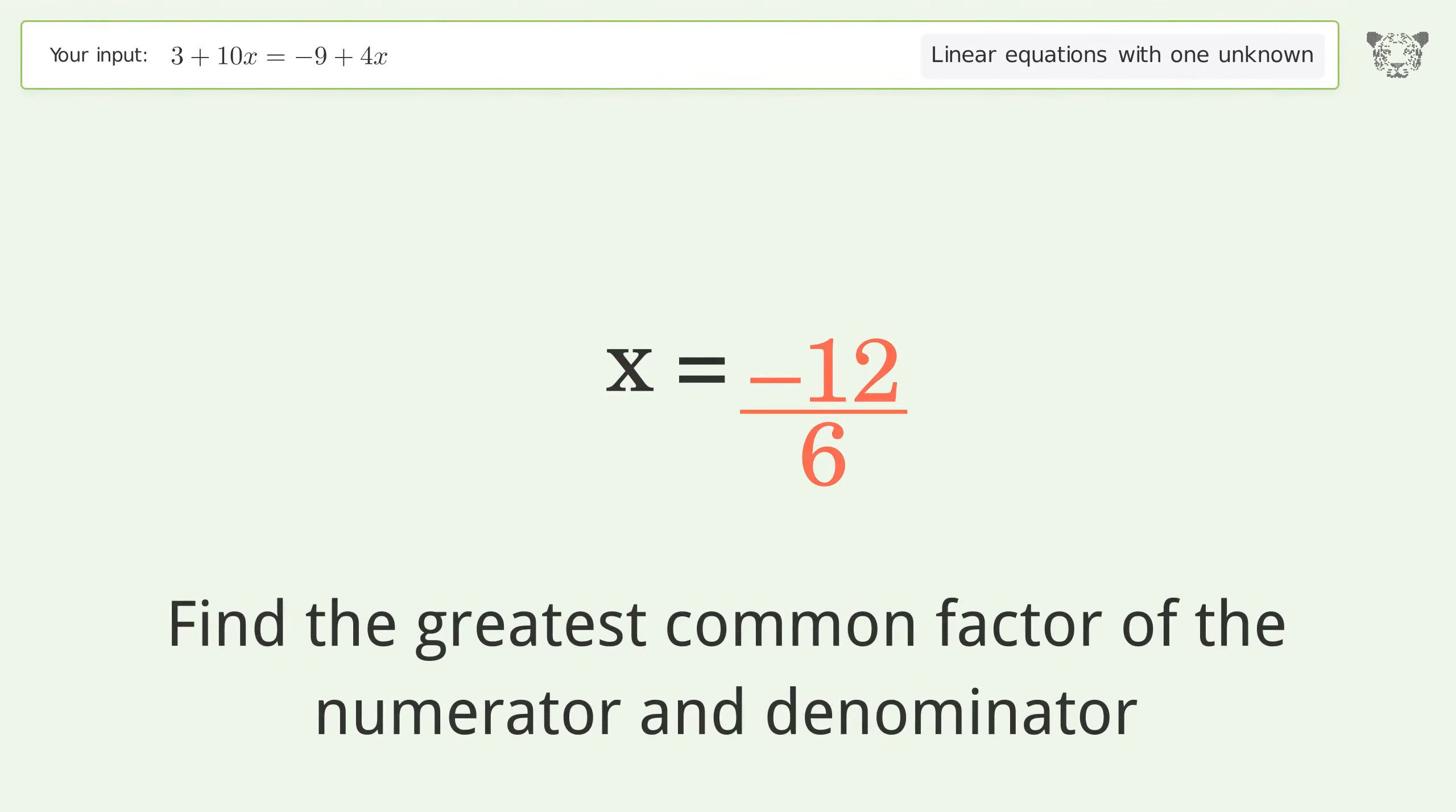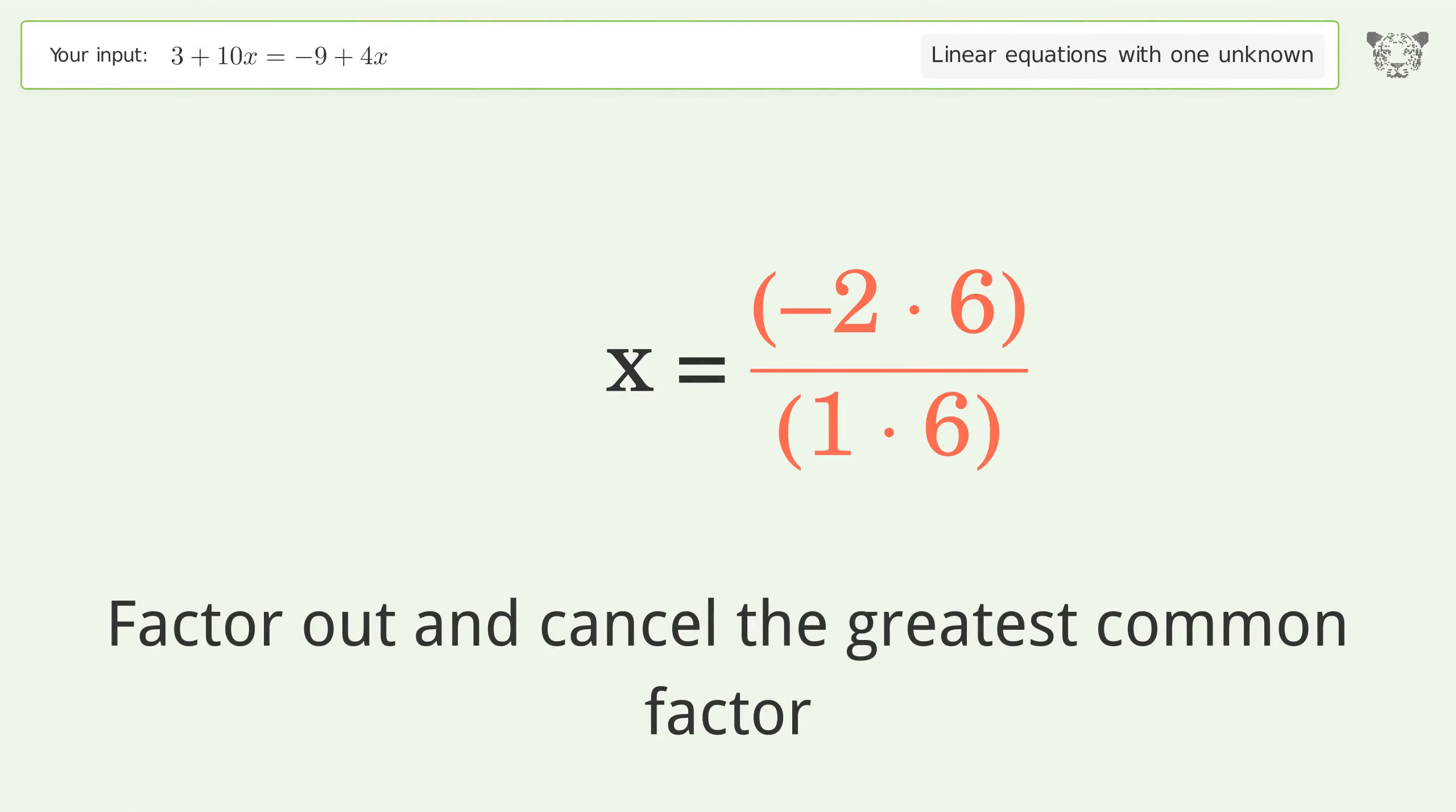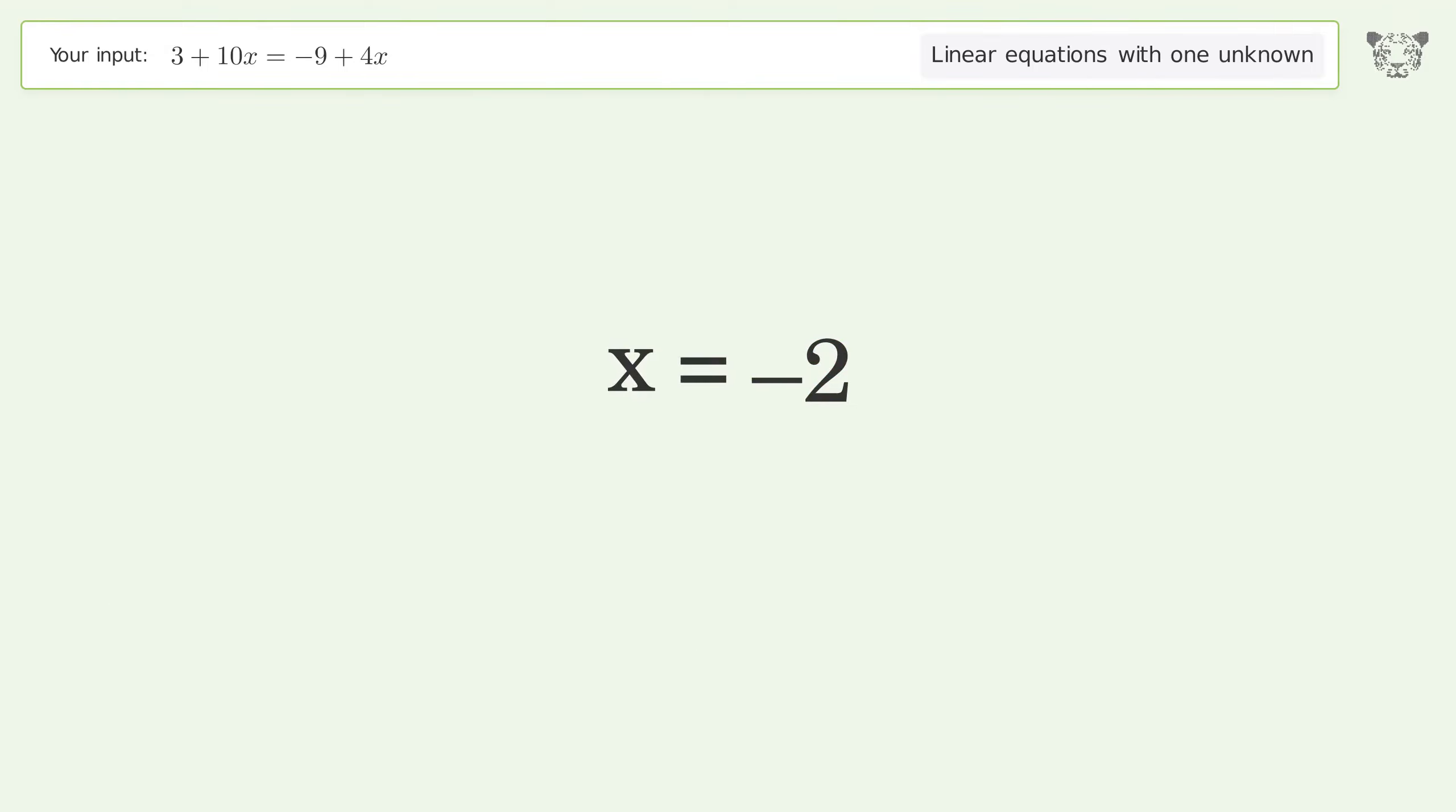Find the greatest common factor of the numerator and denominator. Factor out and cancel the greatest common factor. And so the final result is x equals negative 2.